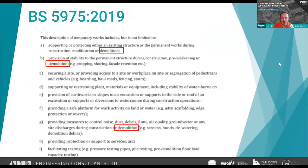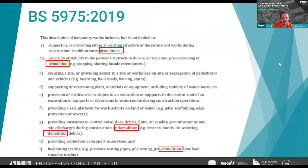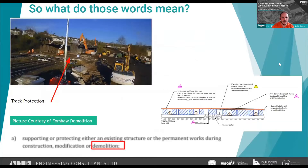BS5975 also covers providing measures to control dust, debris, fume, air quality, groundwater, or any site discharges during construction or demolition, as well as facilitating testing such as pre-demolition floor load testing.